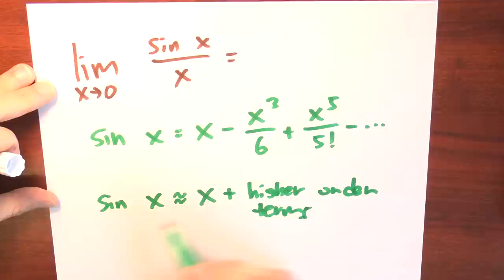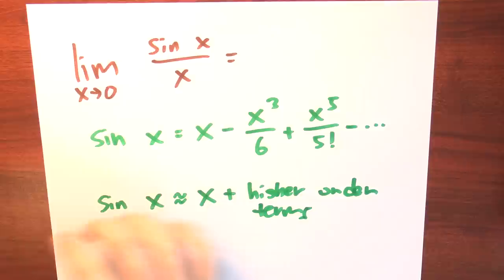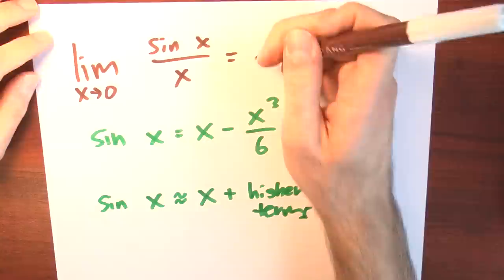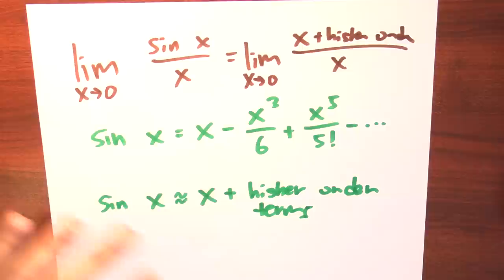So if you believe this, you might try to evaluate this limit by making use of this — admittedly at this point very vague — fact. So what's the limit then as x approaches 0 of x plus some higher order terms divided by x?